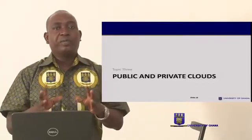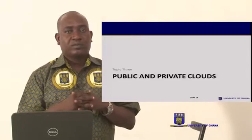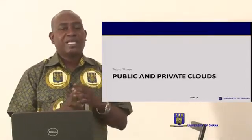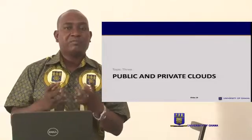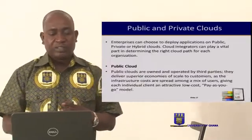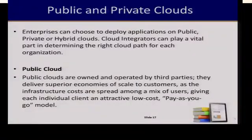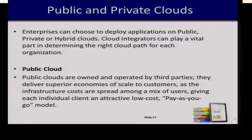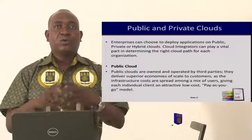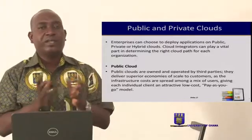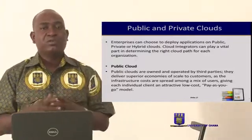Public and private clouds: basically there are three main clouds — we have the public, the private, and then the derivative which is the hybrid of the two. The public ones are made and managed by a third party. Public clouds are owned and operated by third parties and deliver superior economies of scale to customers, as the infrastructure costs are spread among a mix of users, giving each individual client an attractive low cost.